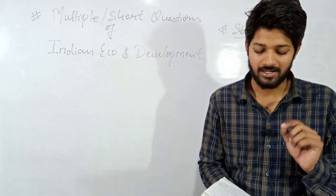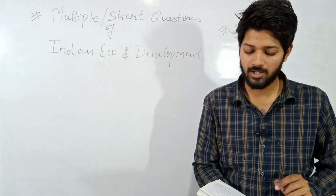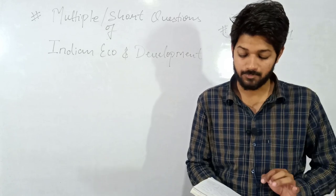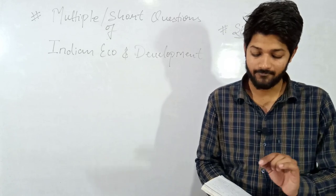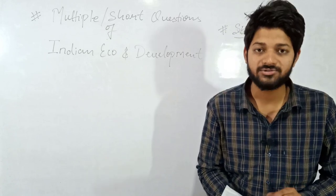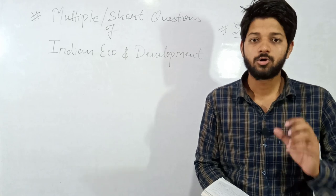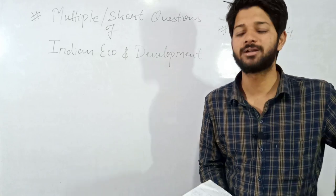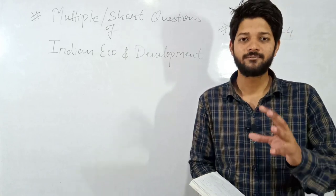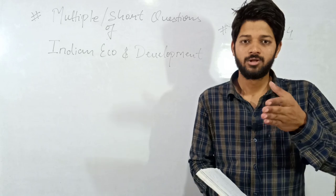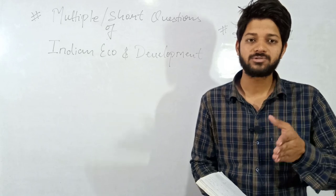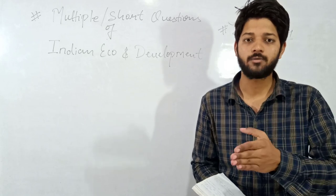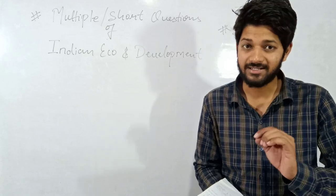Question number ten — fill in the blanks: dash program was started in China with the aim of industrialization. Which program did China introduce for industrialization? The answer is GLF — Great Leap Forward — in the year 1958.